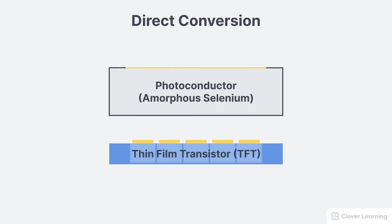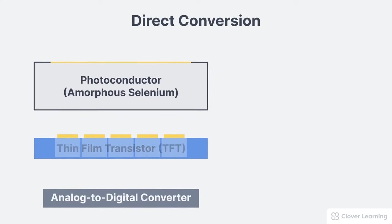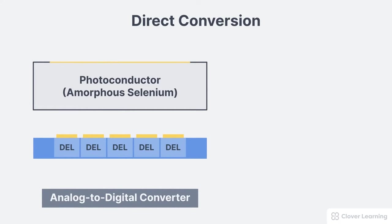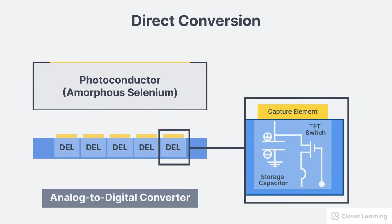First, let's talk about direct conversion DR. Direct conversion DR systems use a photoconductor made of amorphous selenium and a thin film transistor array, otherwise known as a TFT array. The DR image receptor is made up of a matrix of very small detector elements, or DELs. Each DEL contains a capture element, a storage capacitor, and a TFT switch.